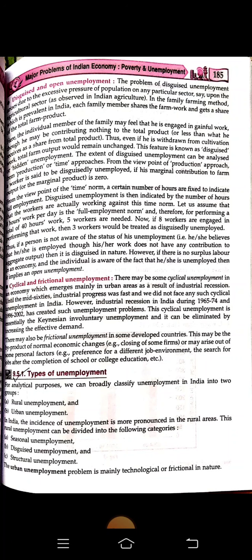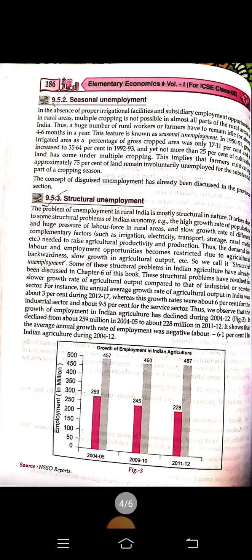Seasonal unemployment, as the name suggests, is not throughout the year — for certain periods there is absence of work and for other periods there is work. For example, farmers are not growing crops throughout the year, so they are employed for about six months and for the remaining six months they have no work. That is seasonal unemployment.